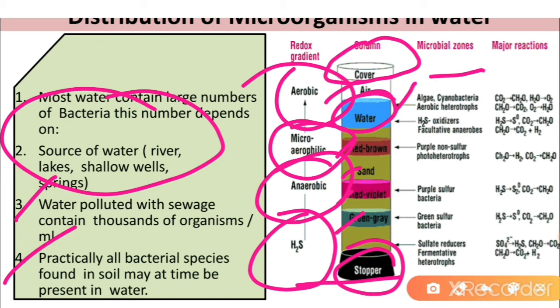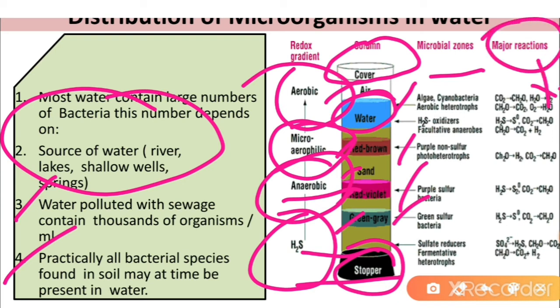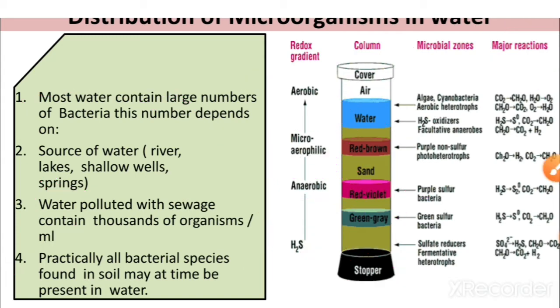In the aerobic zone, algae, cyanobacteria, and aerobic heterotrophs grow. Beneath these, H₂S oxidizers and facultative anaerobes grow. Then purple non-sulfur photoheterotrophs grow. Under anaerobic conditions, purple sulfur bacteria and green sulfur bacteria grow. At the H₂S layer, sulfur reducers and anaerobic heterotrophs grow. These are the major reactions happening throughout this whole zone — this is the distribution of microorganisms in water.